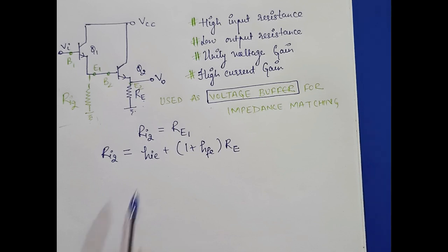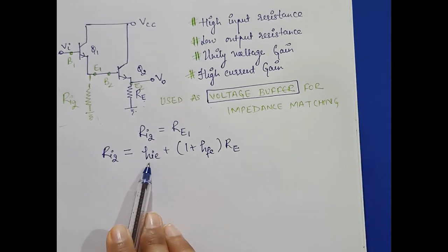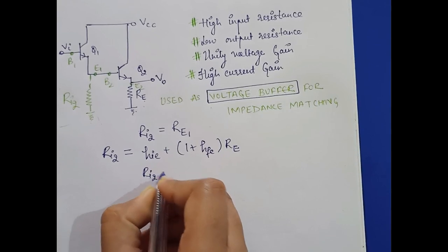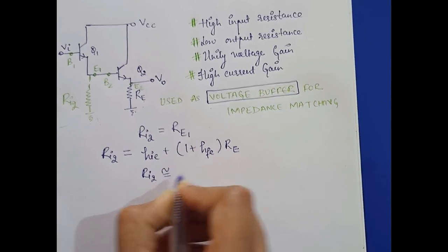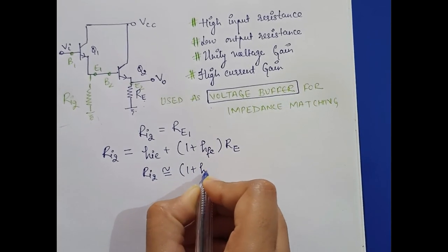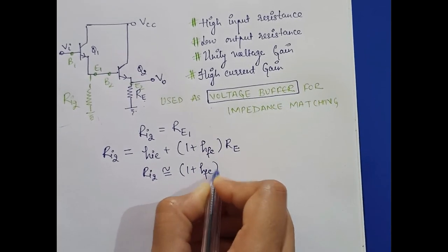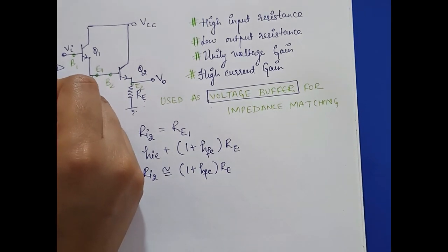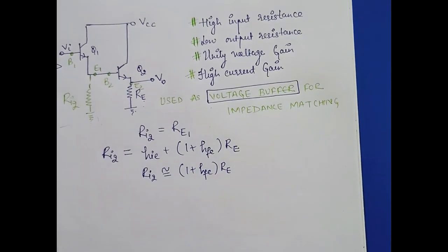Since the value of h_ie is very small, we can say that ri2 is approximately equal to (1 + h_fe) × RE. Now the overall input resistance of this Darlington amplifier...